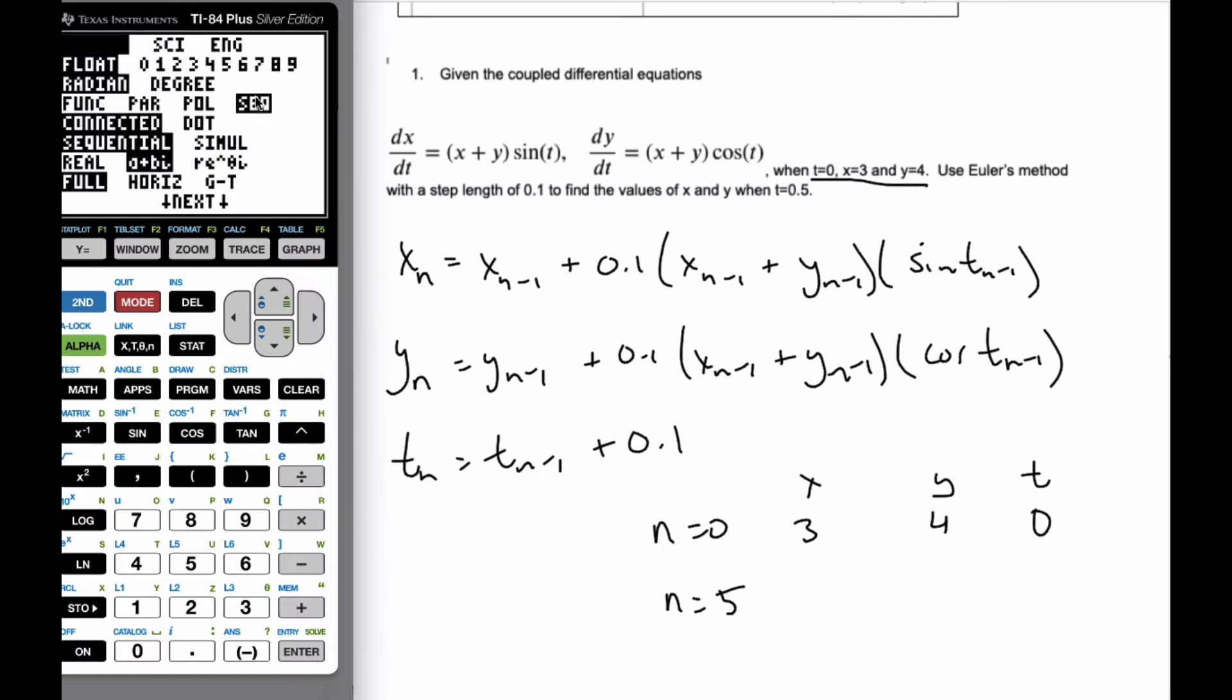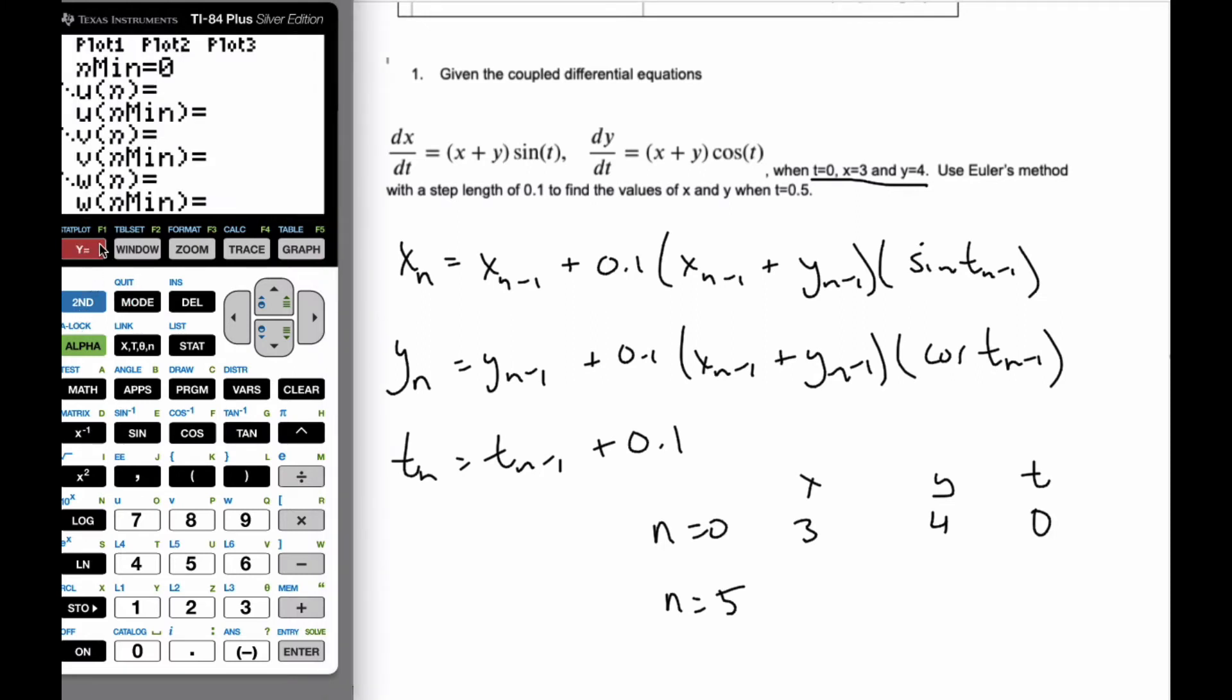So I'm back in sequential mode. I'm going to y equals. I'm going to start where n0, my 0 term. And then I go second u, parenthesis n minus 1 plus 0.1 times.